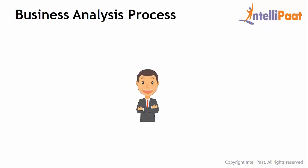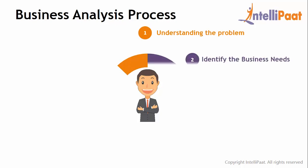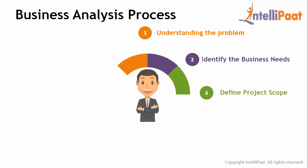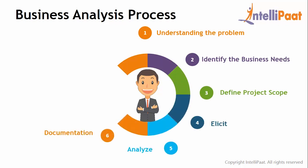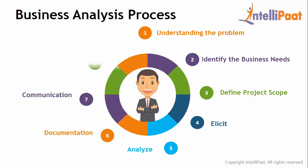Now let us look at the business analysis process — how a business analyst works in an organization. The main role can be described through several prominent tasks: first, they learn and understand the business problem; then they work with business users to identify needs and define the project scope; then comes the core role of eliciting, analyzing, documenting, and communicating requirements; and finally, the business analyst verifies whether the gathered requirements meet project needs.